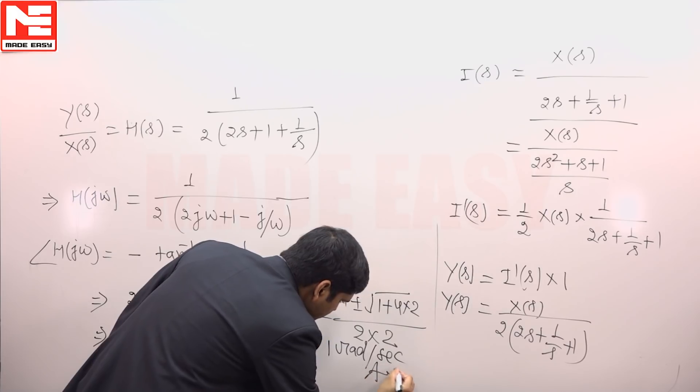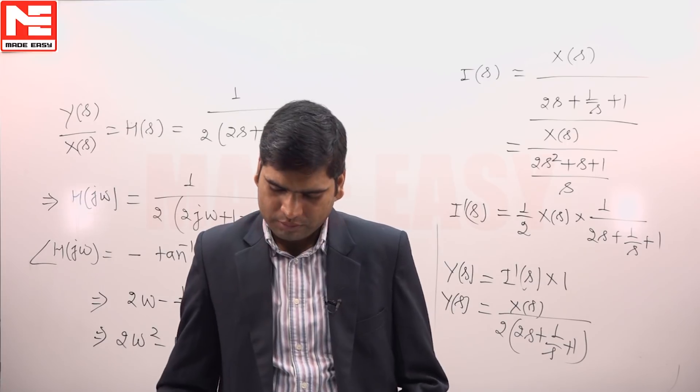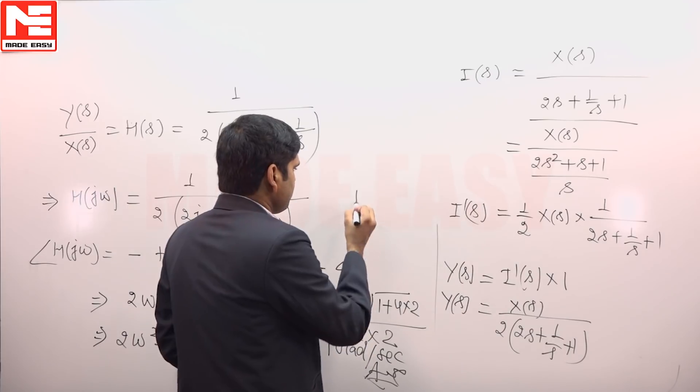Answer for this question is omega 1 radian per second which is given in option b. The right choice for this question is option b.